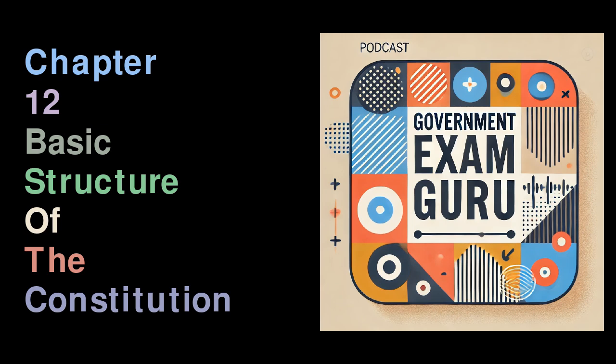Finally, Articles 32, 136, 141, and 142 spell out the powers of the Supreme Court, giving it the authority to protect fundamental rights and administer justice. Similarly, Articles 226 and 227 empower the High Courts to oversee local matters and address grievances. Understanding these basic features is essential for appreciating the framework that governs India and protects its citizens' rights.